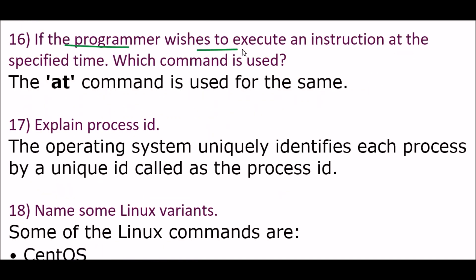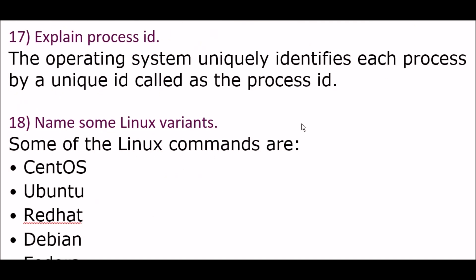Next question: if the programmer wishes to execute instructions at a specified time, which command is used? The at command is used when the programmer wishes to execute instructions at the specified time. Next question: explain process ID. The operating system uniquely identifies each process by a unique ID called the process ID.